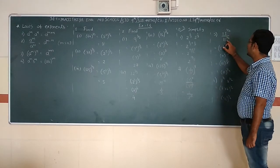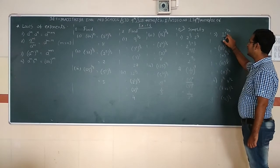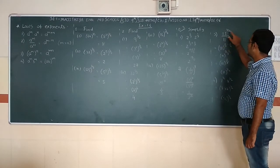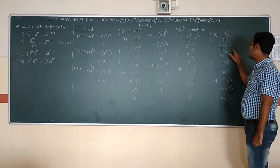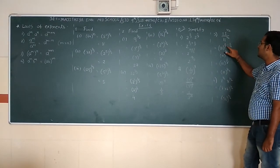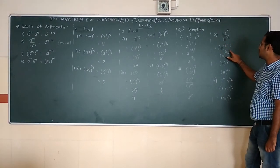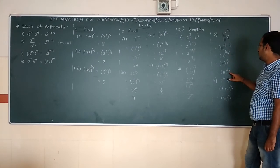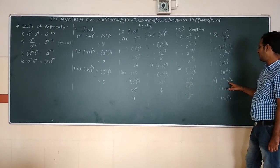Part (iii): 11^(1/2) divided by 11^(1/4). It is in division form and base is same, so in exponent we subtract. 1/2 minus 1/4: common denominator is 4. 2/4 minus 1/4 = 1/4. Answer: 11^(1/4).